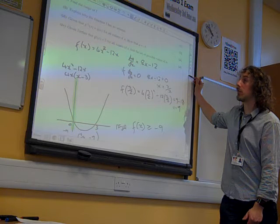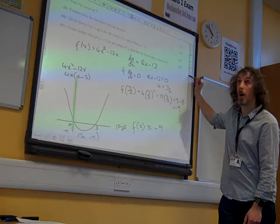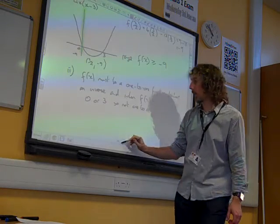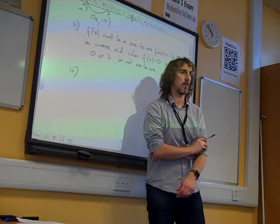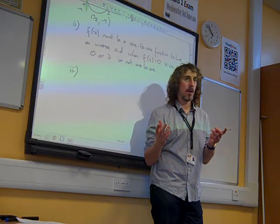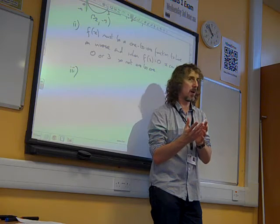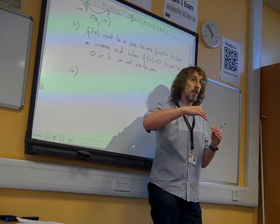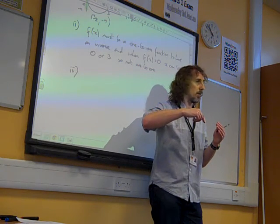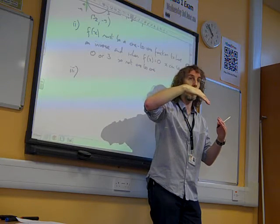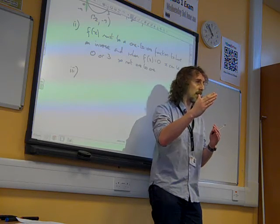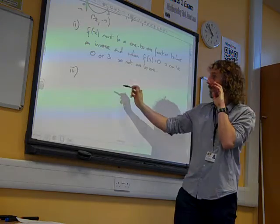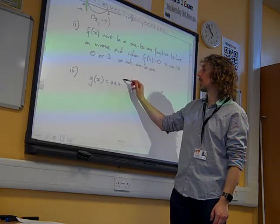Part 3: Given that the inverse of g is the same as g of x for all values of x, show that a equals minus 1. A function and its inverse are reflected in the line y equals x. Now if you reflect in the line y equals x and get the same result — if g(x) and the inverse of g(x) are the same — then as a straight line, it must be perpendicular to the line y equals x. And a line perpendicular to y equals x has gradient minus 1. So g of x was ax plus b. Let's find its inverse.